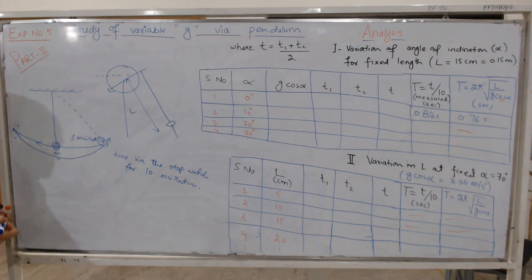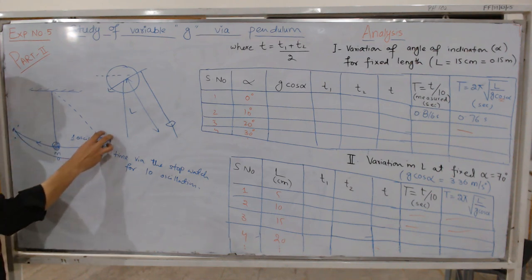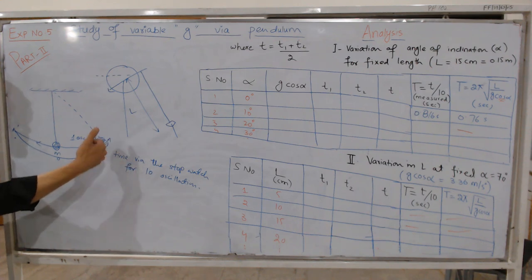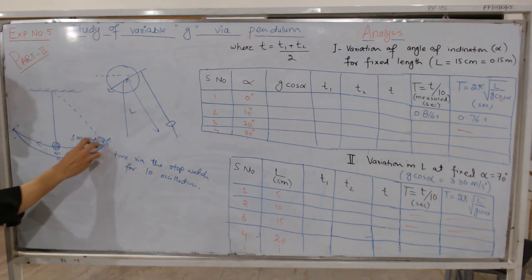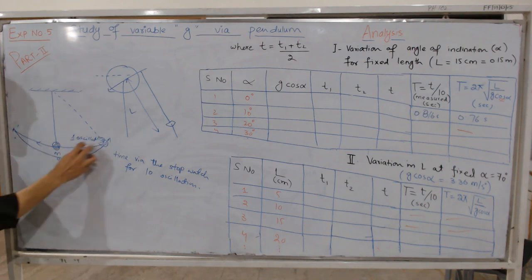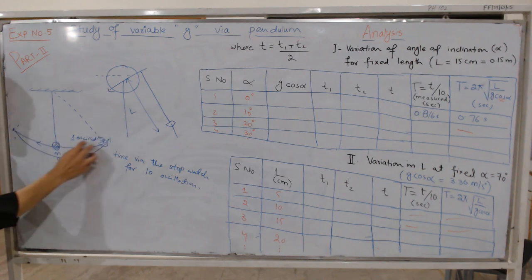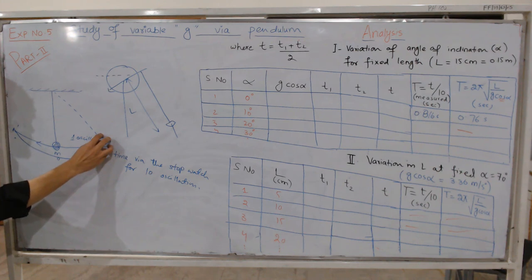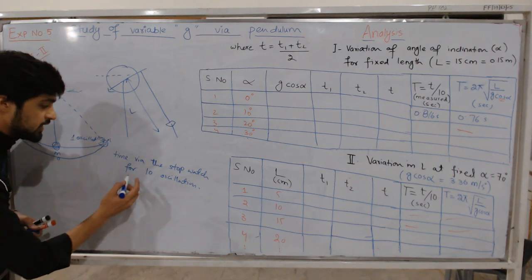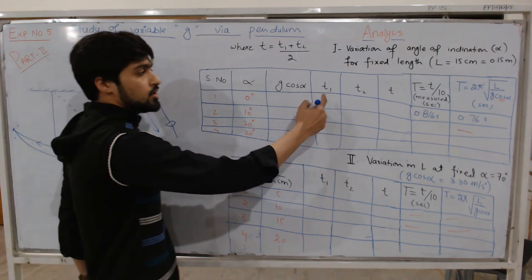You will release the mass; it will move towards A dash and come back towards A — that is one oscillation. Start your stopwatch as you release the pendulum. Count: 1, 2, 3, 4, 5, 6, 7, 8, 9, 10 oscillations. As it completes 10 oscillations, stop the stopwatch and note that time — this will be your T1.